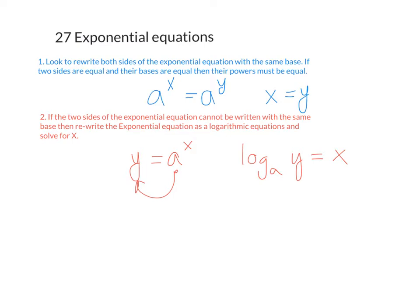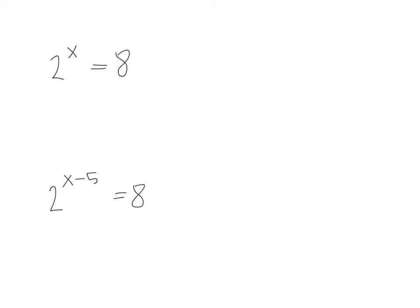Let's take a look at problems that involve that first step. For problem A: I have 2 to the x equals 8. I want to rewrite both sides so they have the same base. I can rewrite 8 as 2 to the third power. Since their bases are the same, their powers are the same, and we end up with x equals 3.